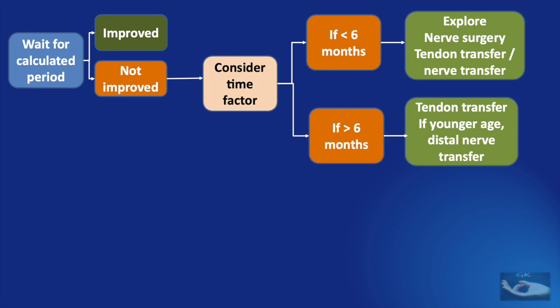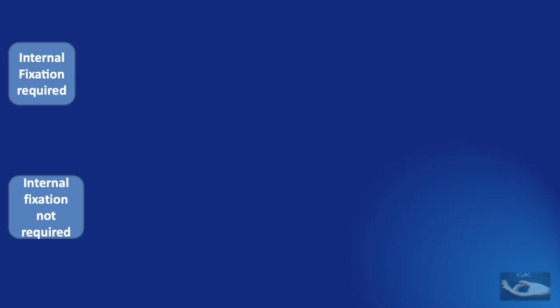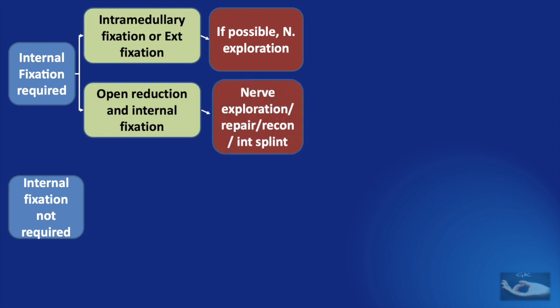Now let us see the algorithm of management for radial nerve palsy associated with fracture of the humerus. According to orthopedic principles, this fracture may or may not require internal fixation. If it does require internal fixation, the planned fixation could be intramedullary fixation, external fixation, or open reduction and internal fixation with appropriate plate and screws. If intramedullary or external fixation is planned, there is usually no access for nerve exploration, and it must be managed conservatively as discussed earlier. However, if possible, nerve exploration should also be done alongside. If open reduction and plate-and-screw fixation is being done, nerve exploration and concomitant repair or reconstruction as required can be performed.